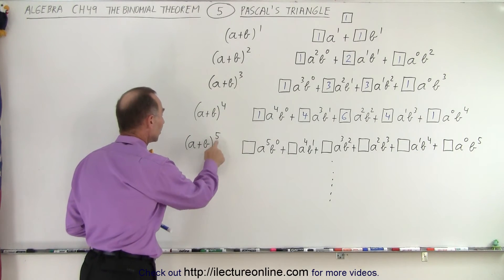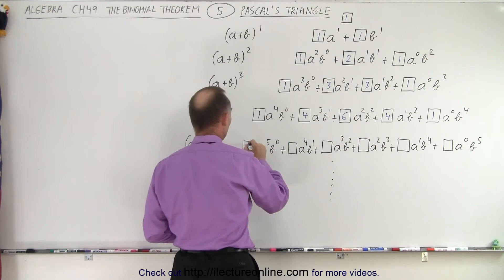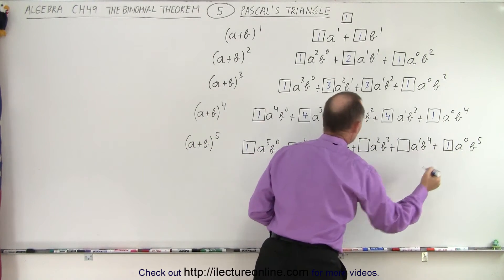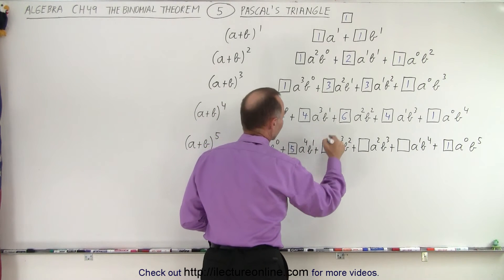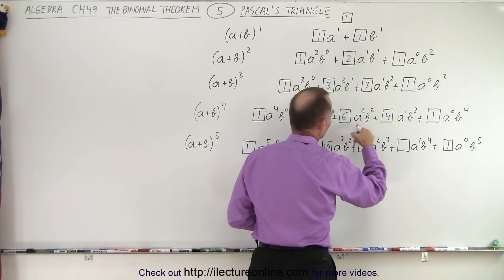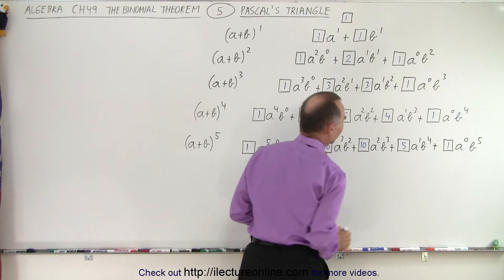And one more, a plus b to the fifth power. Again, we move the 1s out. We get a 1 here. We get a 1 here. Then we see 1 plus 4 gives us 5, 4 plus 6 gives us 10, 6 plus 4 gives us 10, 4 plus 1 gives us 5. And then we have the 1 there.